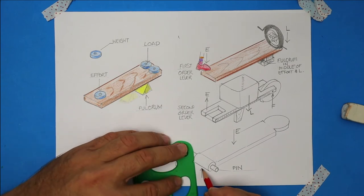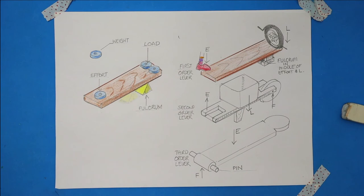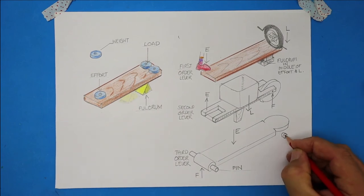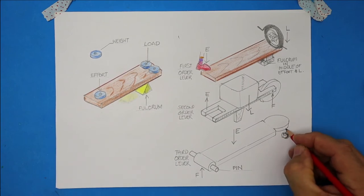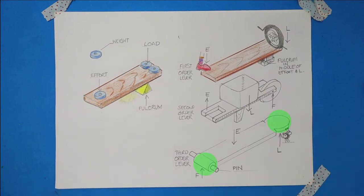So as I push down with the effort, the fulcrum will resist that and push up. So the whole board will tend to swing downwards and towards the fly. But the fly is resisting. It's pushing back. It's providing the load. A third order lever always has the effort in between the other two forces. The effort is always in between.